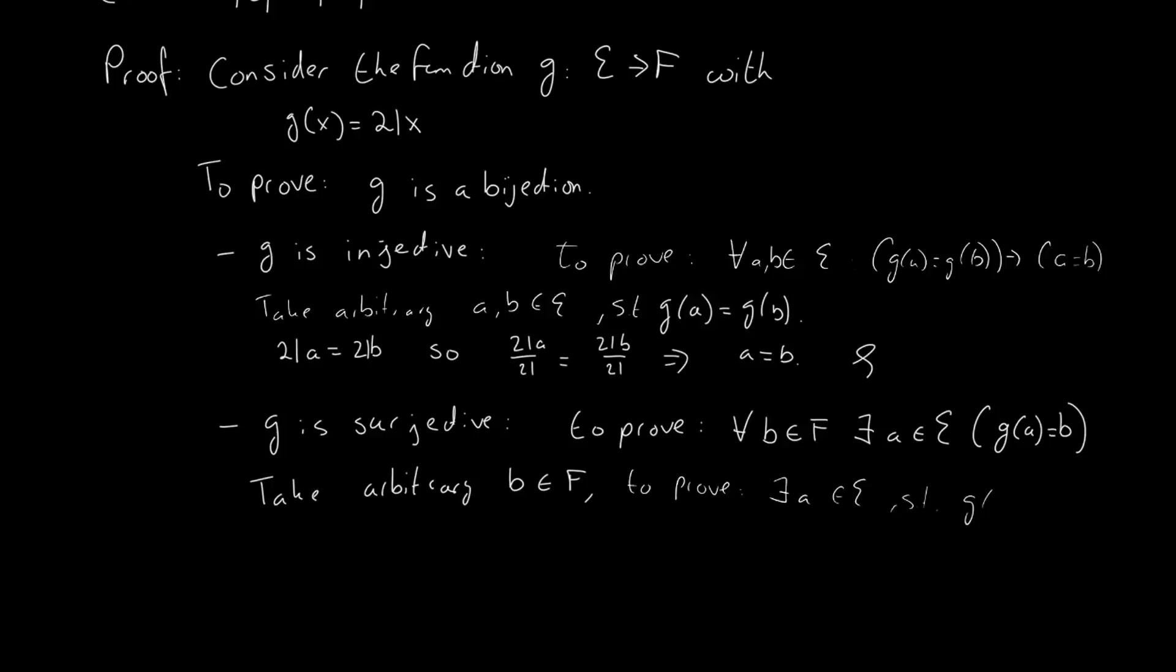Well if b is in F then we know that we can write b as 42 times some number. This is our definition of F after all. It is all numbers divisible by 42.